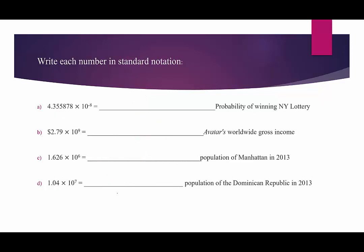How about going the other direction? So now we're given the numbers in scientific notation. We want them in standard form. Here's a nice one. The probability of winning the New York lottery is 4.355878 times 10 to the negative 8th. That negative 8 tells us to move the decimal point 8 times to the left, or we're dividing by 10 eight times. So if we're going to move it 8 times to the left, we're going to have to add a lot of zeros here.